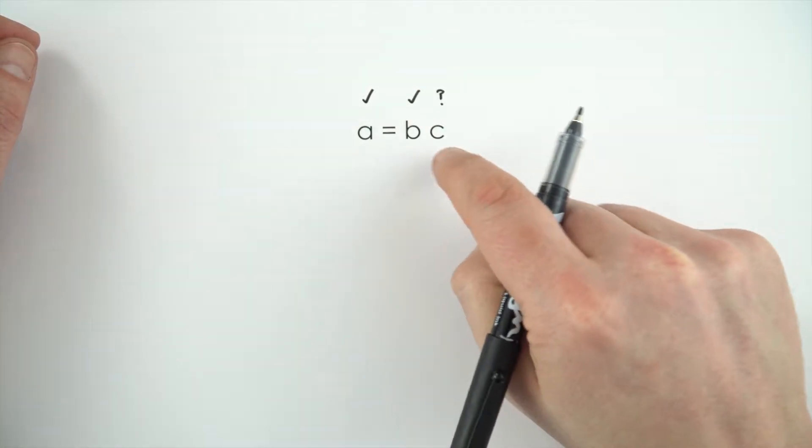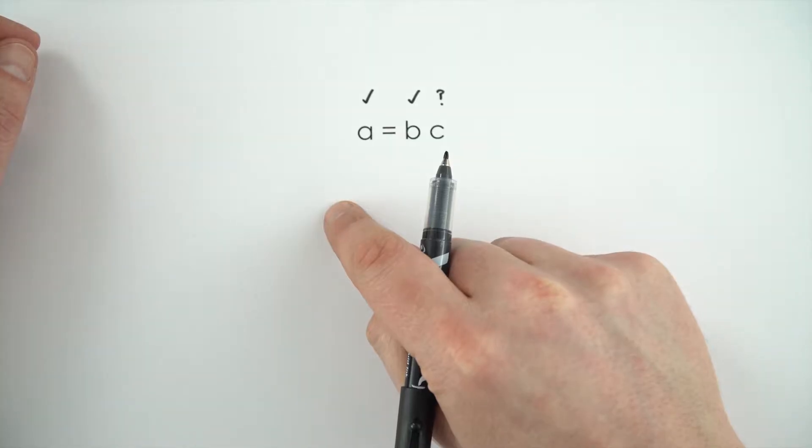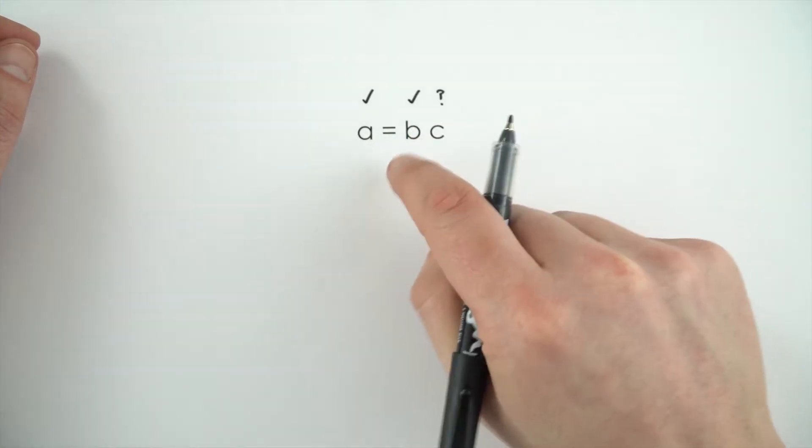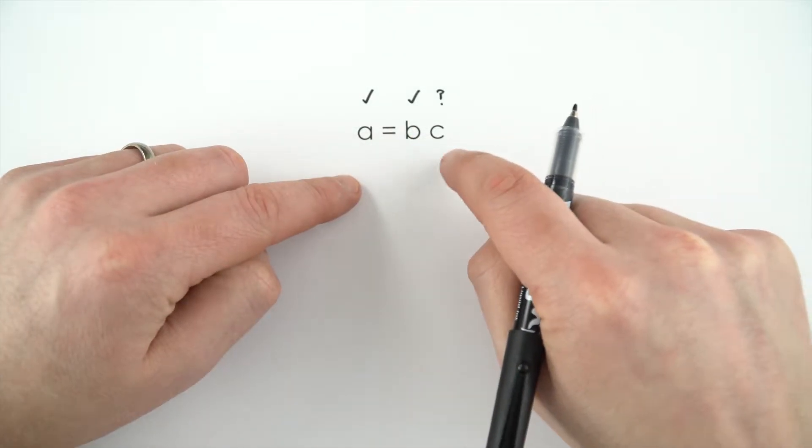What we then need to do is rearrange this to make c the subject of that equation, and we can do that by doing the same to the left as we do to the right.